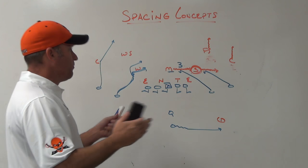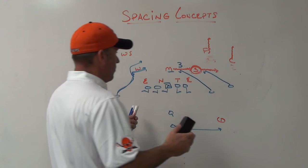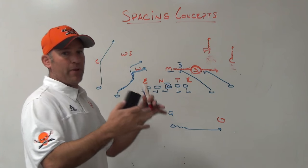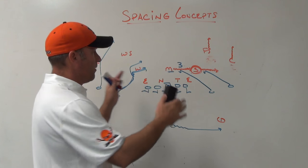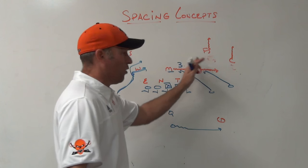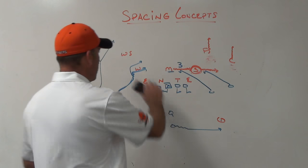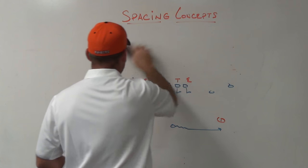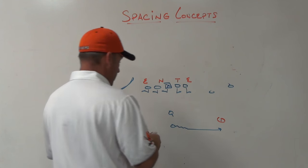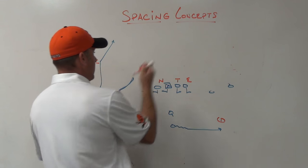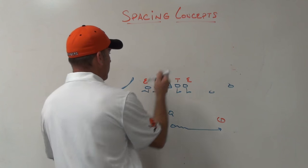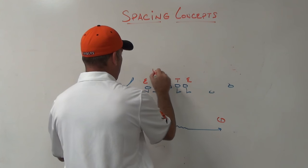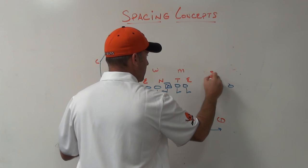When you're playing pattern match teams, you have to use concepts that eat up the pattern match players and get them to match certain routes so you can get two-on-one where you want them. If you're playing a spot drop team or an eight-man front three-deep team, it's even better — that's one of the reasons a lot of teams got out of spot dropping or straight cover three, because they run out of guys in space.